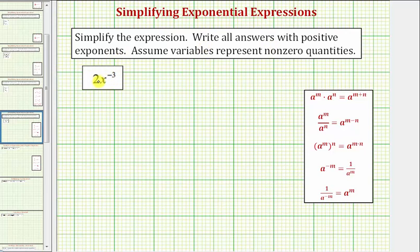The important thing to recognize here is the exponent on 2 is actually one, and the exponent of negative three is only attached to the base of x.